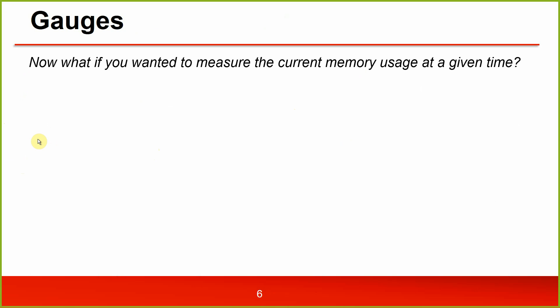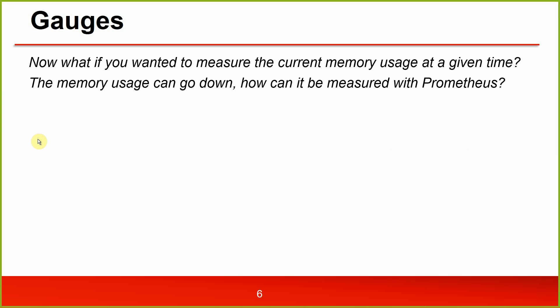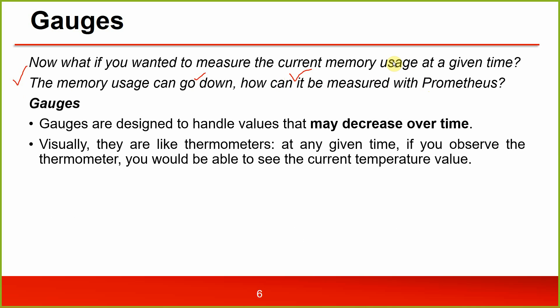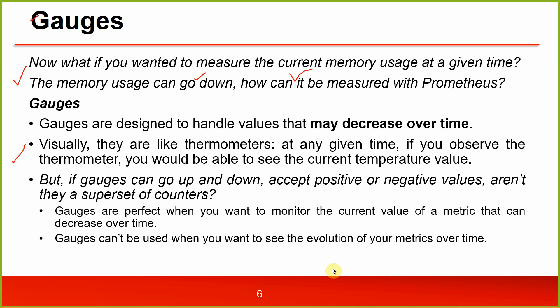Gauges are used when you want to measure a current value at a given time that can go down — like memory usage, which can both increase and decrease. Gauges are designed to handle values that may decrease over time; they are like thermometers showing the current temperature at any given point. However, gauges cannot be used when you want to see the evolution of a metric over time.